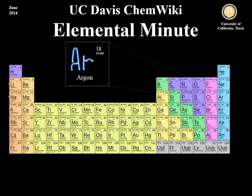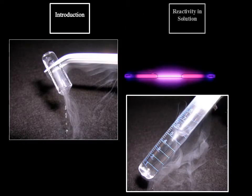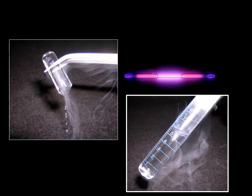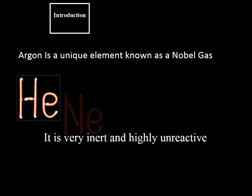Argon is a colorless and odorless gas primarily found in our atmosphere. It is a unique element that requires very low temperatures in order to become a solid or a liquid. It is also considered a noble gas and is inert and highly unreactive.